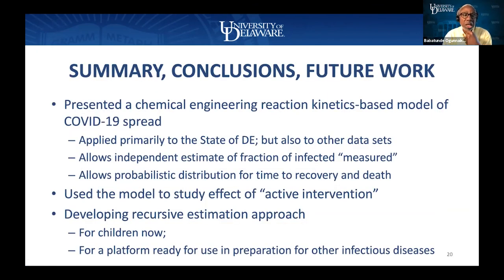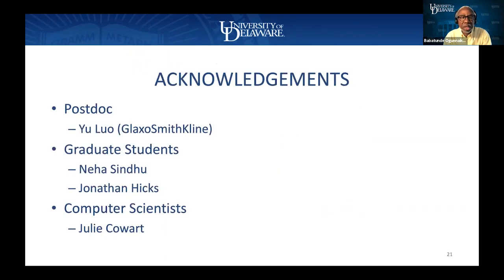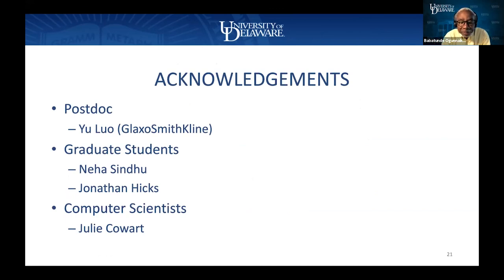Let me summarize and conclude. We've used a chemical engineering reaction kinetics-based model for COVID-19 spread. We've applied it to the state of Delaware, though we haven't shown you the other data sets we've applied it to. We've used the model to study the effect of active intervention. We're now developing a recursive approach for children, and we're going to develop a platform that decision makers can use. I'd like to acknowledge my postdoc Yu Luo, who now has a real job with GlaxoSmithKline, and two grad students working with Rob Aikens and with me — Neha and Jonathan — and Julie Card, the computer scientist working with us. Thank you very much.